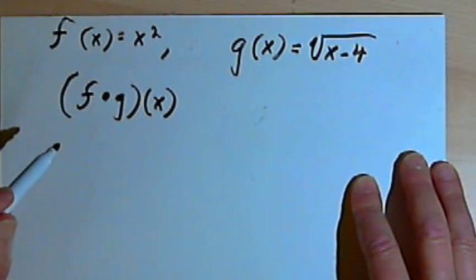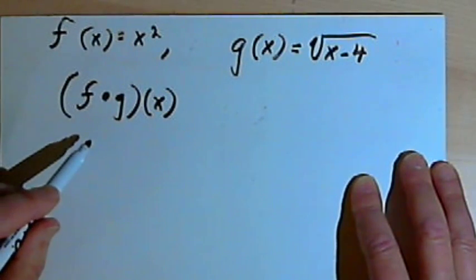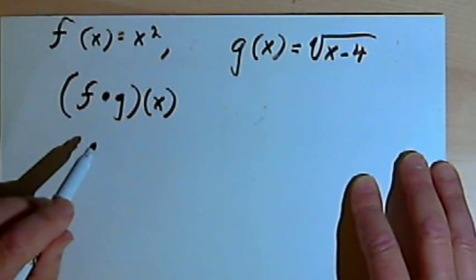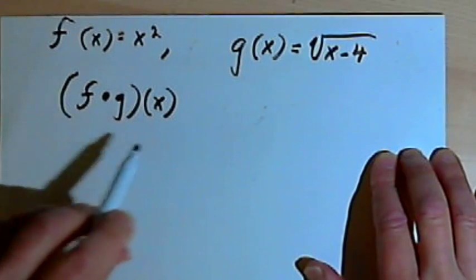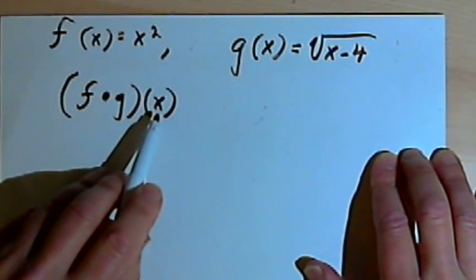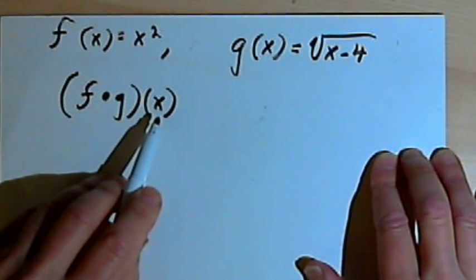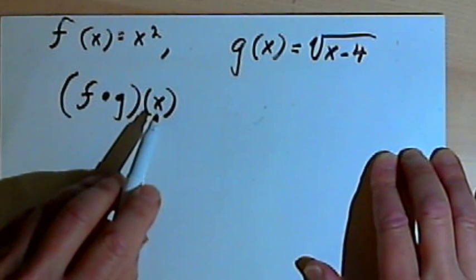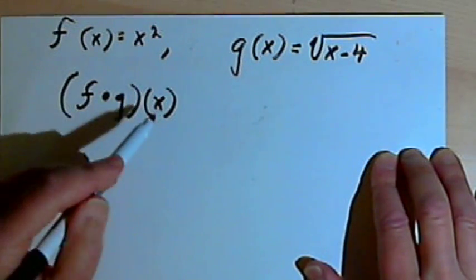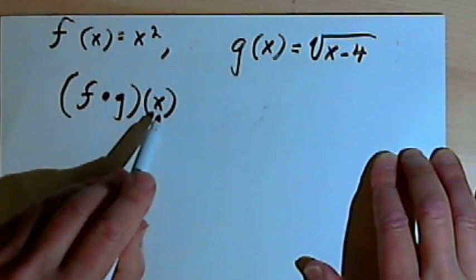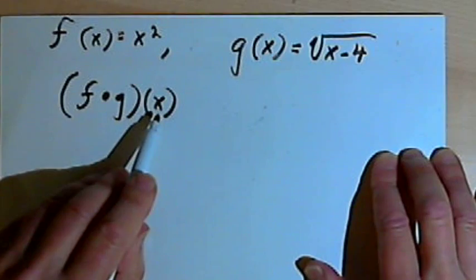Remember, when we have the domain of a function, what we're basically asking is what values of x can I have which will allow the function to produce some result? In other words, what values of x can I place into the function?